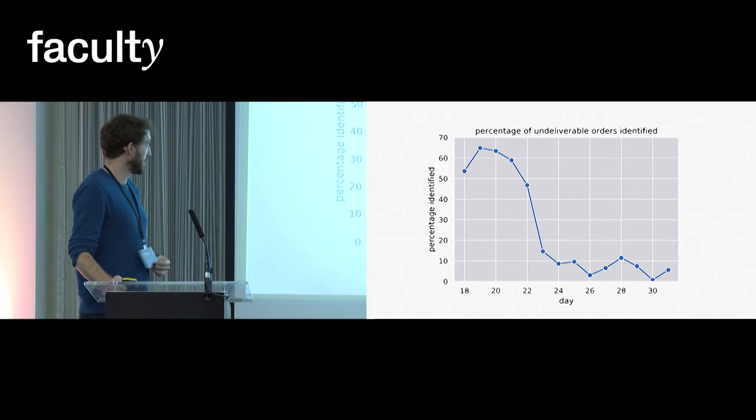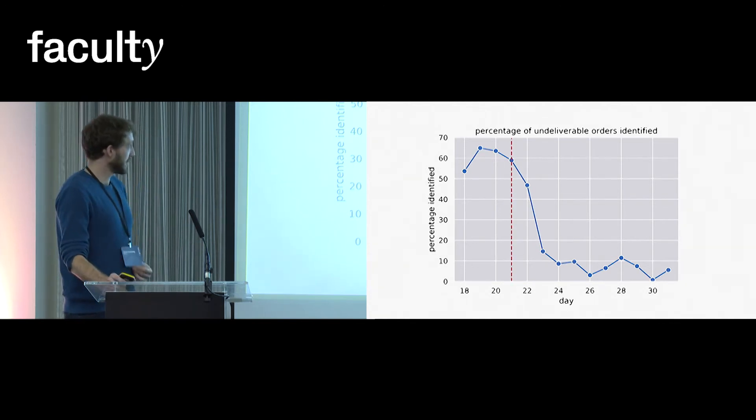We're accurately identifying more than 60% of the undeliverable orders on some of those days. But then all of a sudden, seemingly overnight, after the 21st day of the month, the performance gets a lot worse.